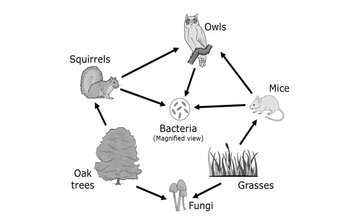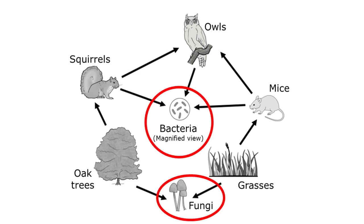Here you can see a food web that shows decomposers. The bacteria are getting their energy from the squirrels, owls, and mice, while the fungi are getting their energy from the oak trees and the grasses. The bacteria and the fungi are decomposers — they're not killing or eating these other organisms in the way that you might think. They're decomposing them after they die.